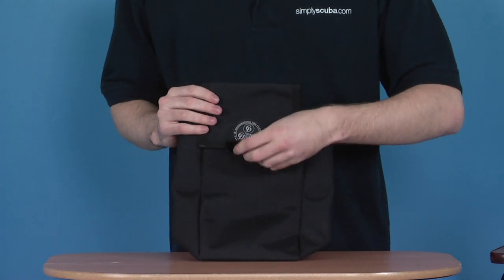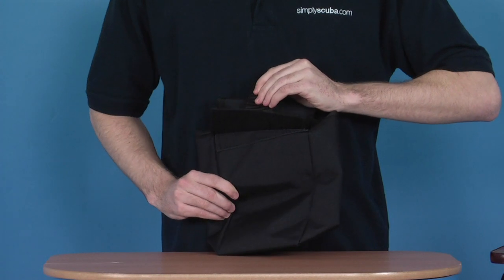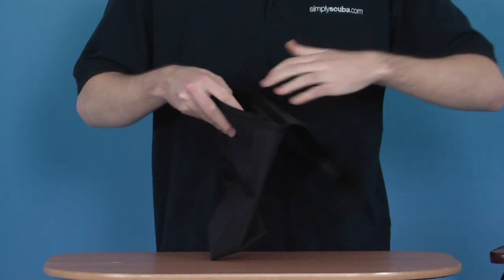To access the pouch, there's a handy little strap on the front here. Pull it up towards you and put it across to remove the Velcro.